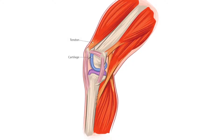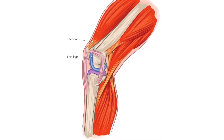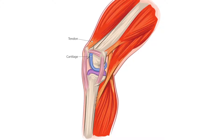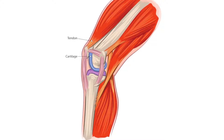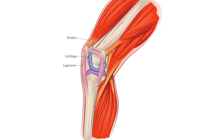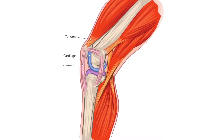Secondly, there are tendons, which are very strong but not very elastic tissues that attach muscles to bones and allow the muscles to pull on a bone to move it. Thirdly, there are ligaments, which are also very strong and slightly elastic, that connect bones to bones and are there to keep the joint stable.